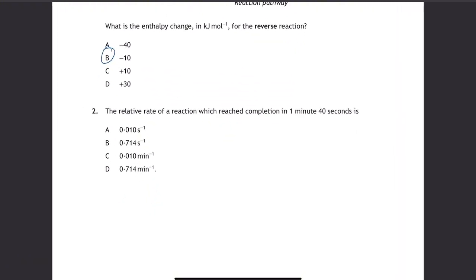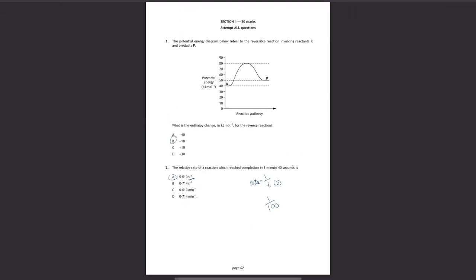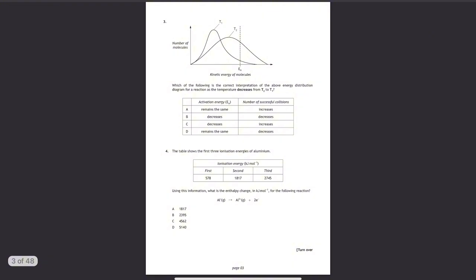The relative rate calculation is always 1 over T, but T has to be in seconds. So it's 1 over 100, because 1 minute and 40 seconds is 100 seconds. If you put that in your calculator, that's 0.1, and it's always in per seconds, s to the minus 1.